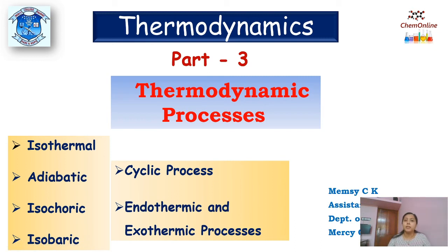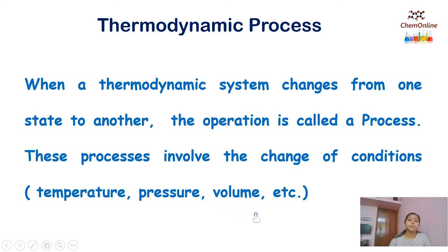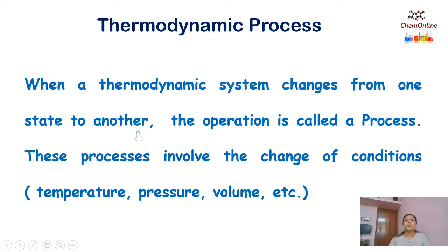Dear students, today we will learn about different types of thermodynamic processes. First, let's see what a thermodynamic process is. We know that thermodynamic properties like pressure, volume, temperature etc. define a thermodynamic system. Whenever there is a change in any of these thermodynamic properties, we say that the system has undergone a change of state. This is called a process. So when a thermodynamic system changes from one state to another, the operation is called a process.